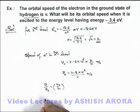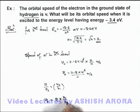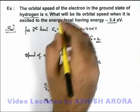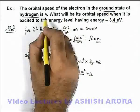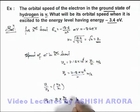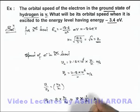So in this situation, v₂ can be written as v₁ multiplied by n₁/n₂. We are given that orbital speed in the ground state, n = 1, is v. So we can write v × 1/2, which gives us v/2. That will be the answer to this problem.